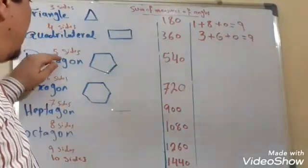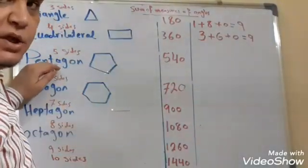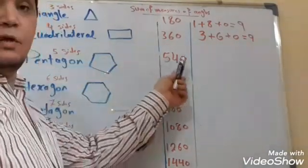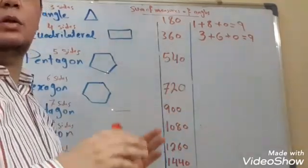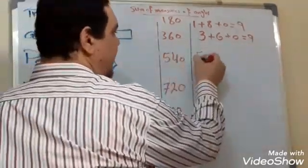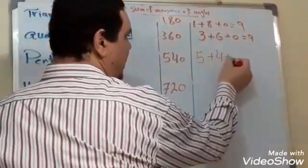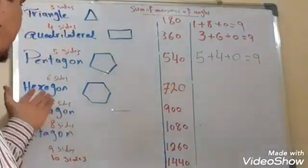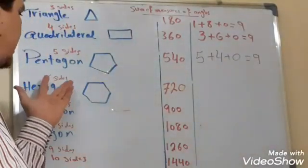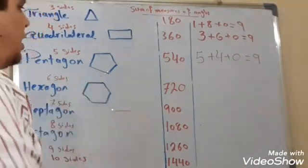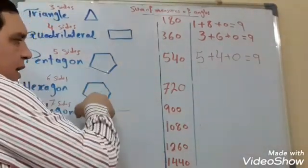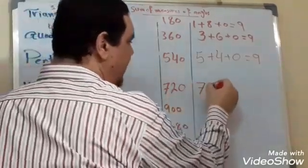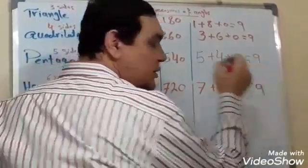After that, a pentagon which has five sides — all angles in the pentagon sum to 540. If we add all digits: 5 plus 4 plus 0 equals nine. After that, a hexagon which has six sides — all angles in this polygon sum to 720. If we add: 7 plus 2 plus 0 equals also nine.